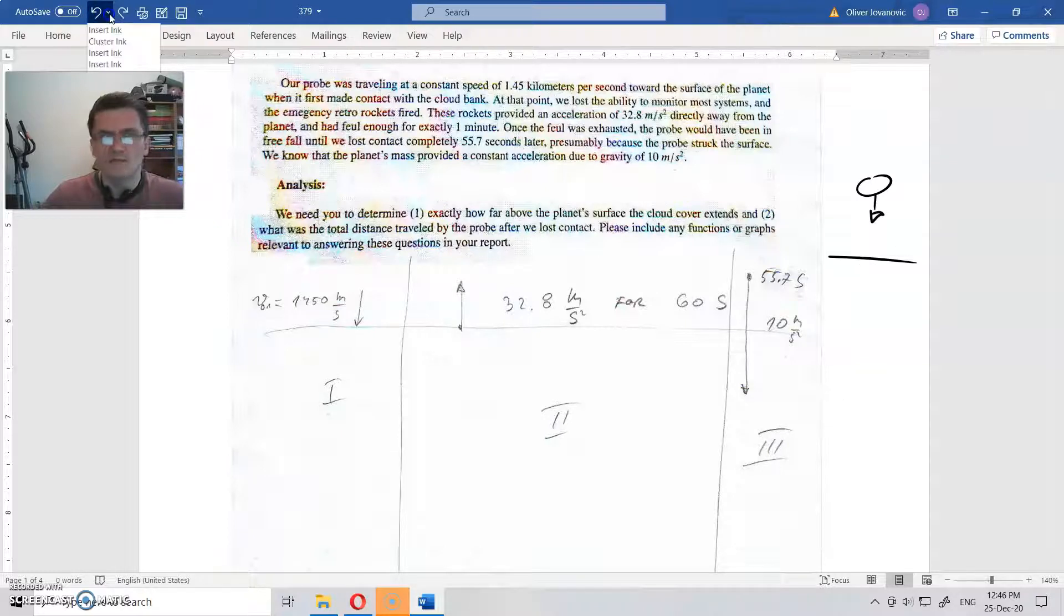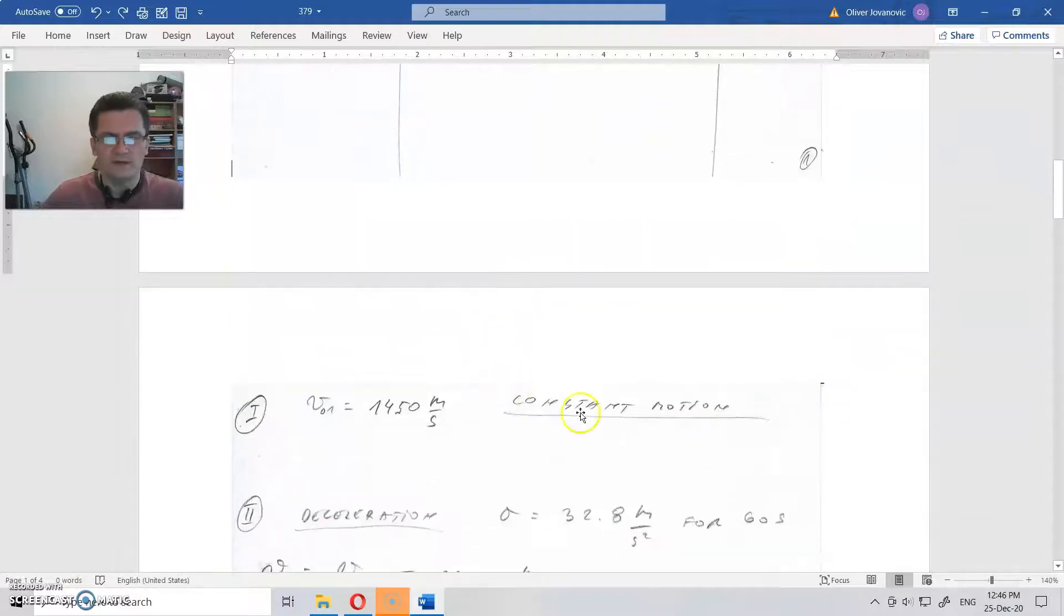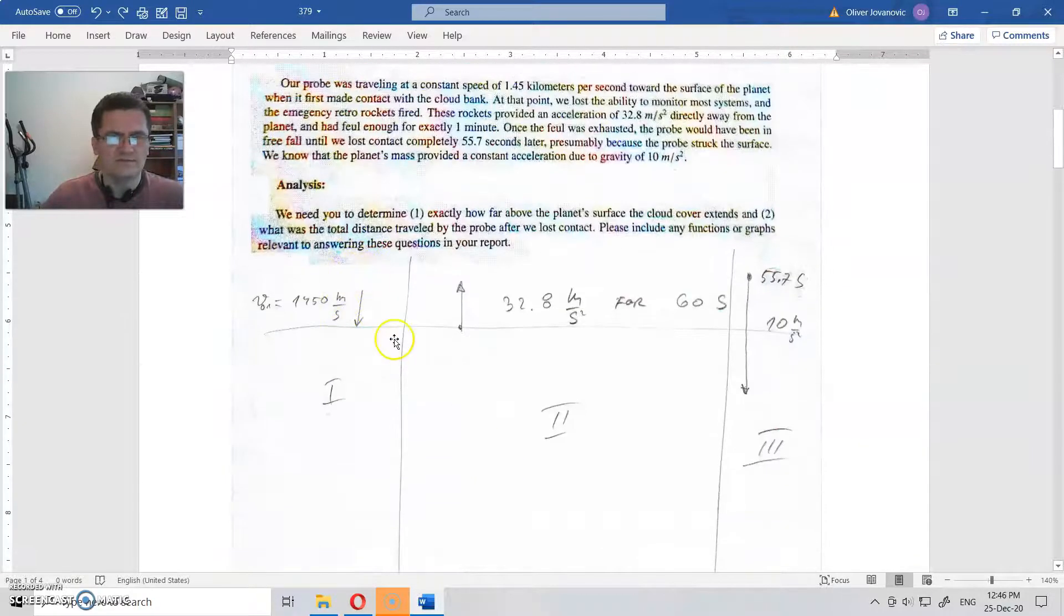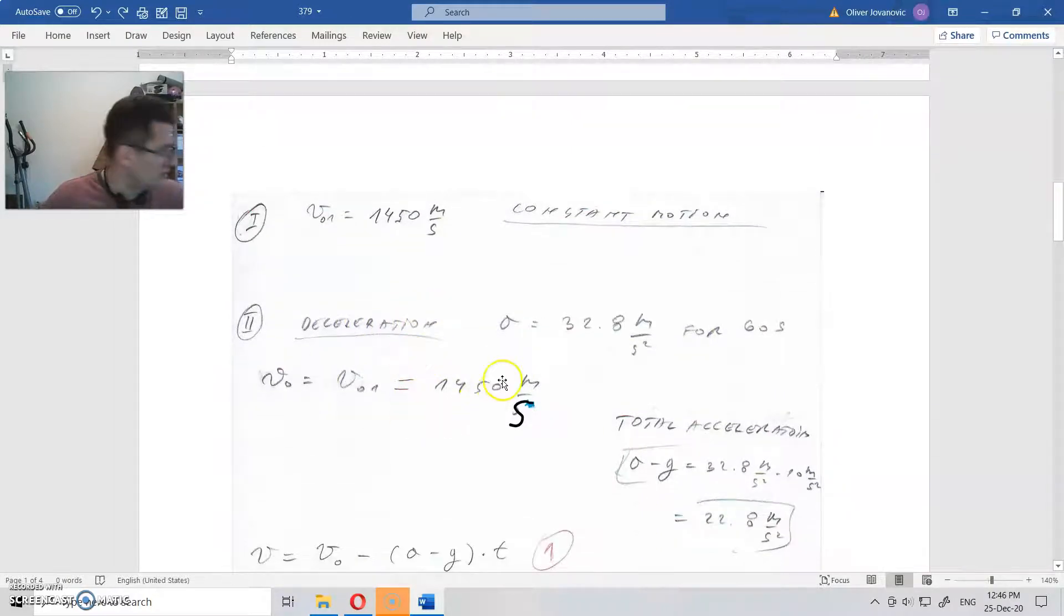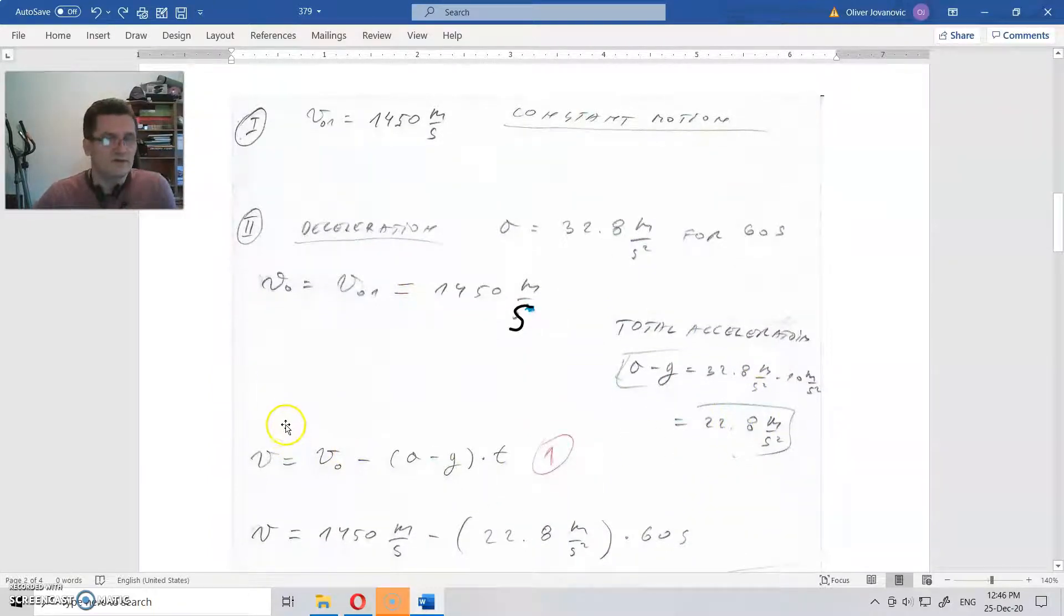This is the constant motion. Now this is when we hit the cloud surface, so this is the initial motion. This is the total deceleration, and this is the speed for that. This is the speed after some time t when you move with the initial speed, and this is the overall acceleration.